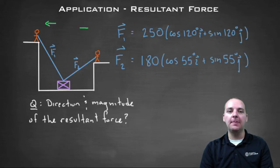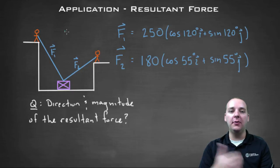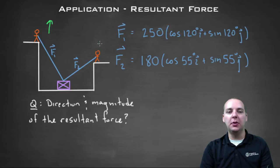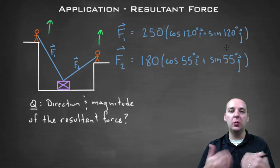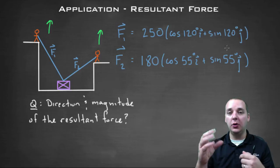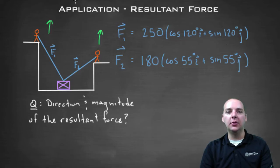But on the other hand, the J component, they're actually working together because both of these individuals are above the box. This individual is pulling up and so is he, so their J components will complement one another when you combine them with the resultant force.